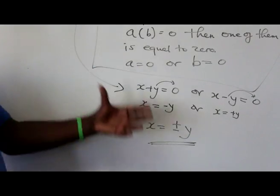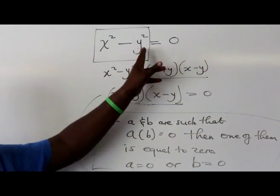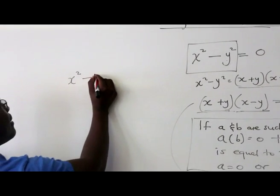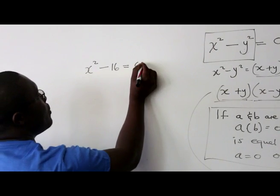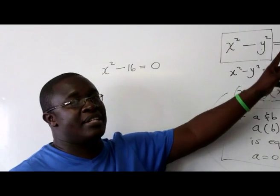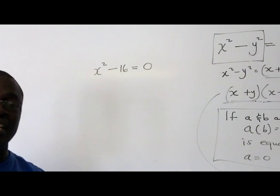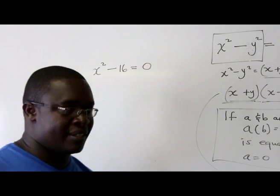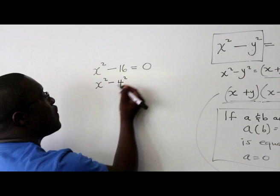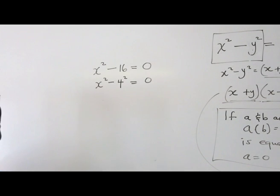Now, this was generalized because I was using x and y. What about if we have actually a real value for y? Let's do an example where we say x² - 16 = 0. In this case, they didn't write it explicitly that it's y². You have to know that 16 is a perfect square, such that you will be able to use the difference of two squares. We can rewrite this equation as x² - 4² = 0, because 4 × 4 gives us 16.